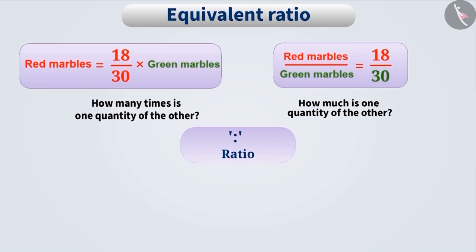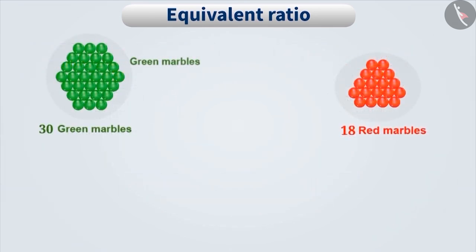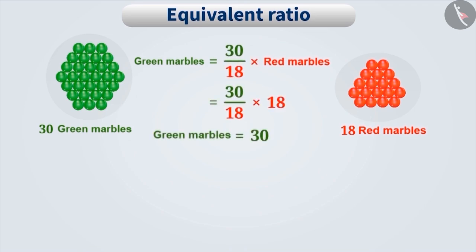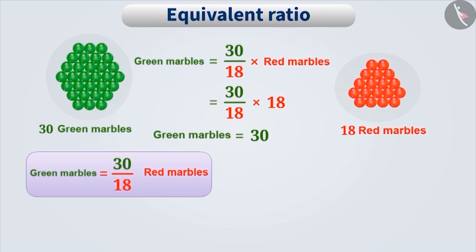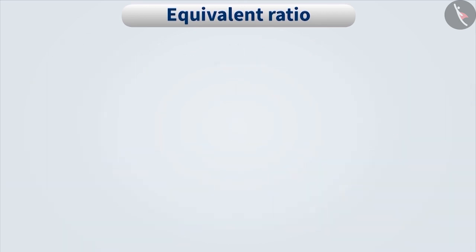We express the ratio with a colon sign. For example, the ratio of the number of red marbles to the number of green marbles is 18 is to 30. This shows that the number of red marbles is 18 by 30 times the number of green marbles. We can also express this comparison in reverse: the ratio of the number of green marbles to the number of red marbles is 30 is to 18.